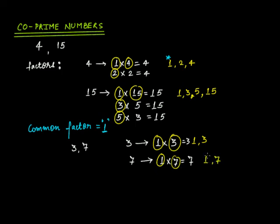What are the common factors? Again, just the number 1. This is common in both these two cases. 3 is not present here and 7 is not present. So again, we have 1. This is the number 1 which is the common factor in case of 3 and 7. Therefore, 3 and 7, 4 and 15, these are co-prime numbers.